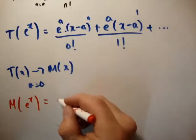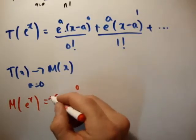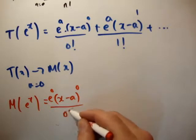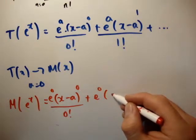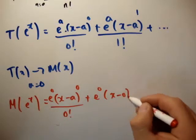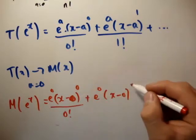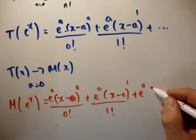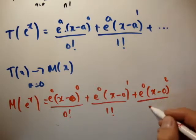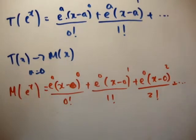So just get x minus a to the 0 times 0 factorial, plus e to the 0 and x minus 0 to the 1, that's 1 factorial, e to the 0, x minus 0 to the 2, 2 factorial, and so on.